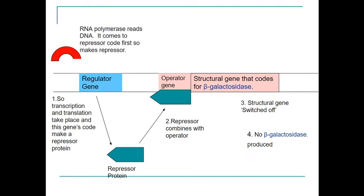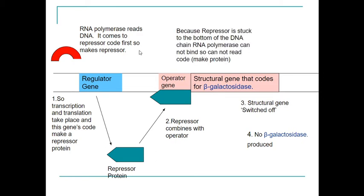One important thing to point out is that RNA polymerase will not read the structural genes that code for or produce the beta-galactosidase enzyme.